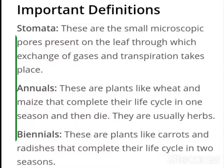Important definitions: Stomata — these are the small microscopic pores present on the leaves through which exchange of gases and transpiration takes place. Annuals — these are plants like wheat and maize that complete their life cycle in one season and then die. They are usually herbs.